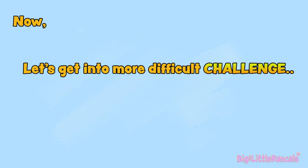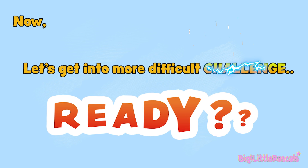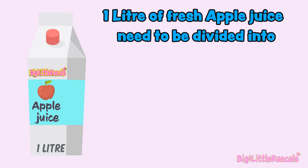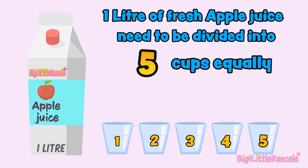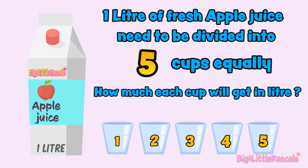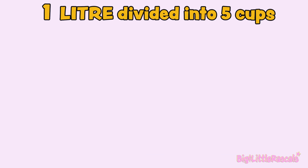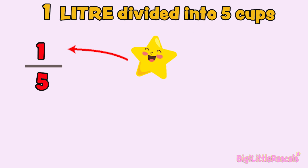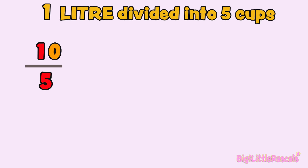Now let's get into a more difficult challenge. Ready? This is 1 liter of fresh apple juice. We need to divide this into 5 cups equally. So the question is: how much will each cup get in liters? 1 liter divided into 5 cups — the fraction is represented as 1 fifth. Because 1 is smaller than 5, we need to borrow. Borrow 1 zero from our smiling star so it can be divided by 5. One zero borrowed, and now the top number becomes 10.